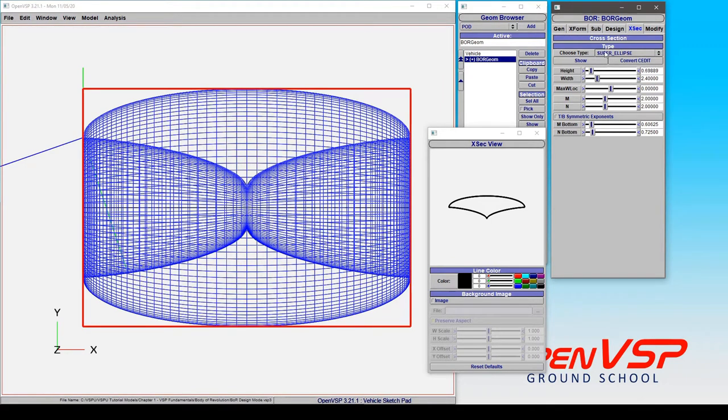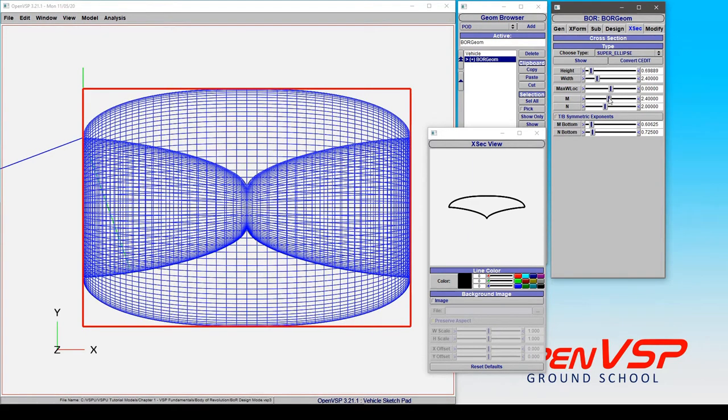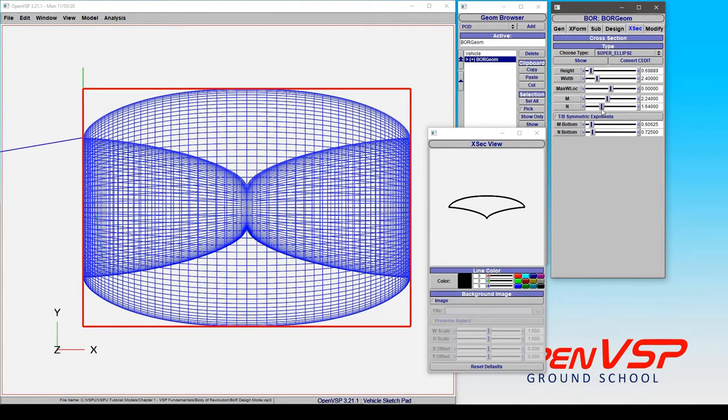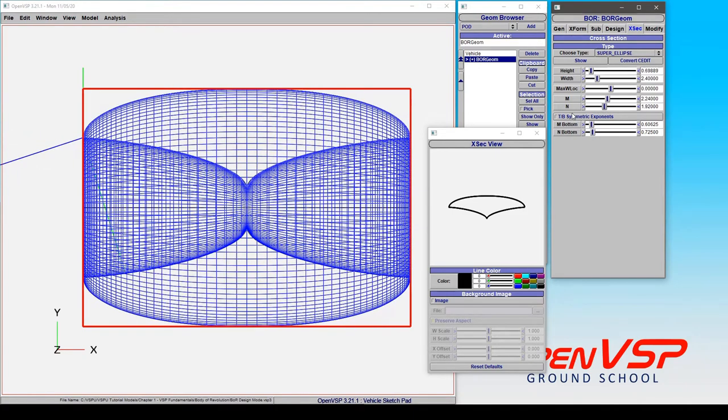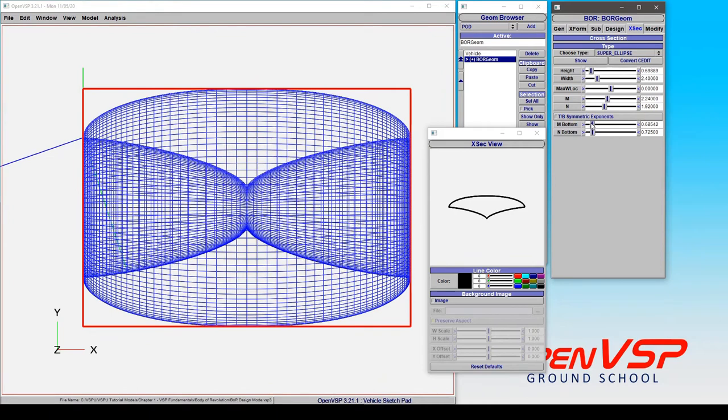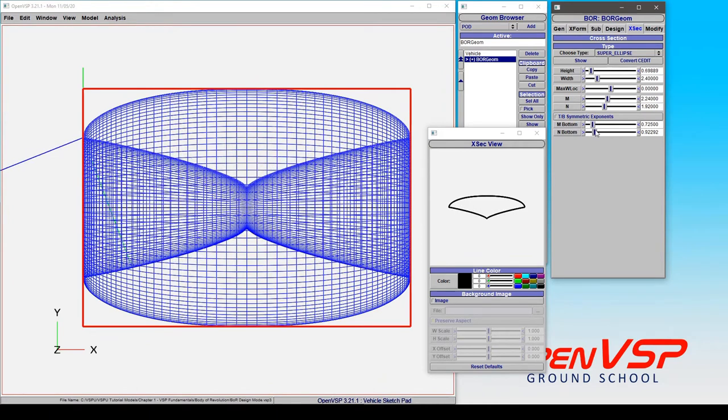In this case I've chosen a super ellipse in flow through mode where we can adjust the top M and N parameters and the bottom can be adjusted differently. We can set these up and let's give this maybe a little bit different N. So it's using the entire component and then wrapping it around as a body revolution.